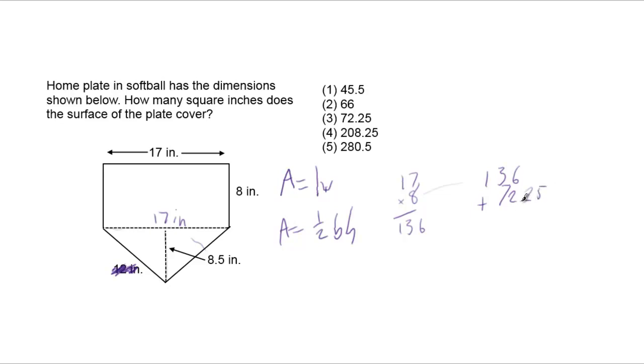And again, you can just keep that in your calculator to save you some time. Push the plus key and 136, which is the area of the rectangle, equals 208.25. The answer is choice 4, 208.25.